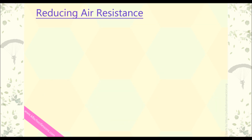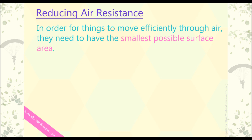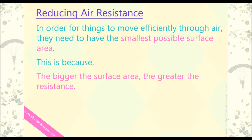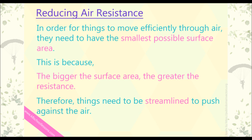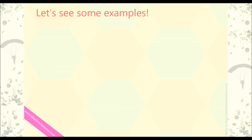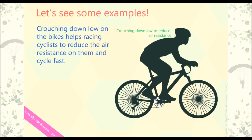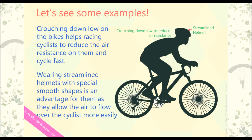Reducing air resistance: in order for things to move efficiently through air, they need to have the smallest possible surface area, because the bigger the surface area, the greater the resistance. Therefore, things need to be streamlined to push against the air. Crouching down low on the bikes helps racing cyclists to reduce air resistance and cycle fast. Wearing streamlined helmets with special smooth shapes is an advantage, as they allow the air to flow over the cyclists more easily.